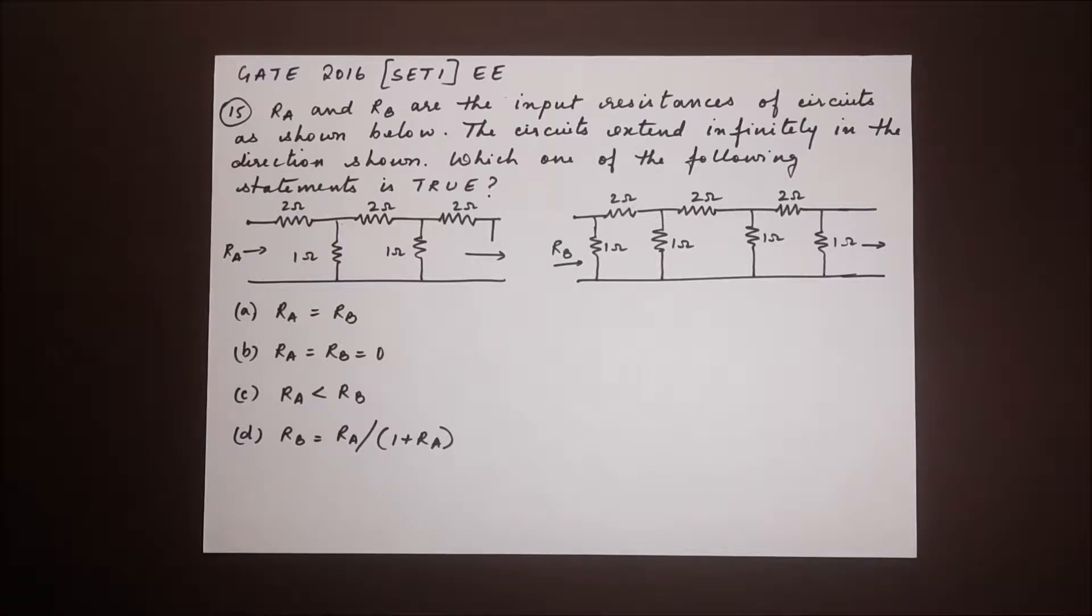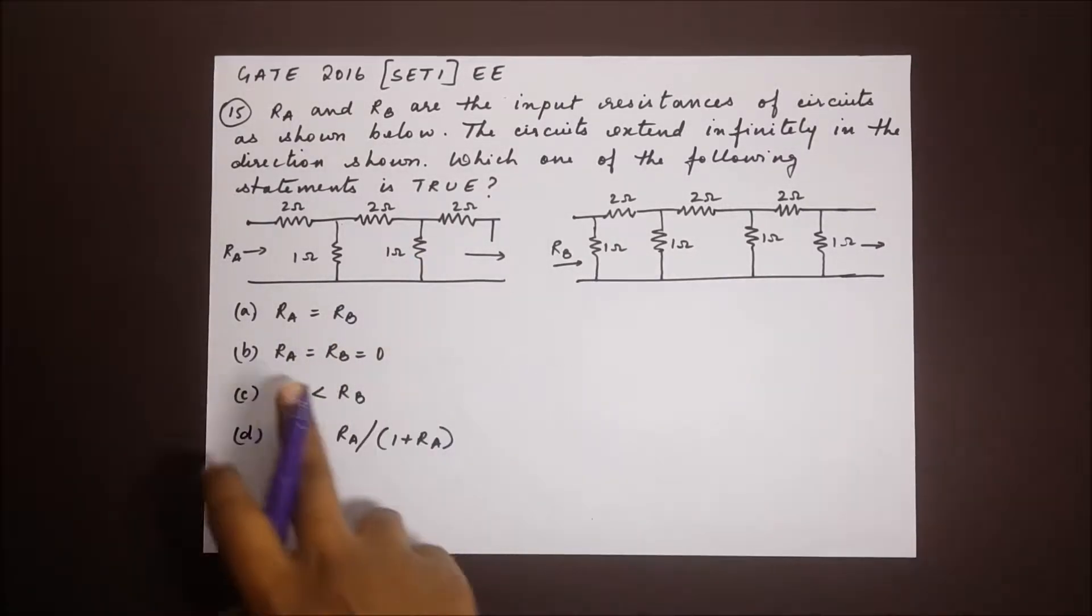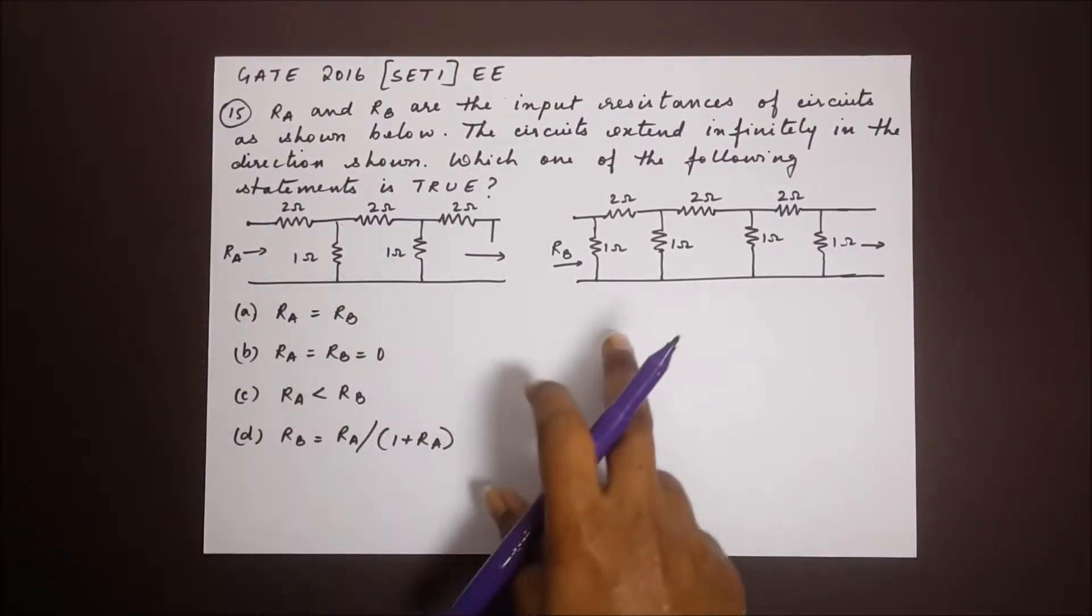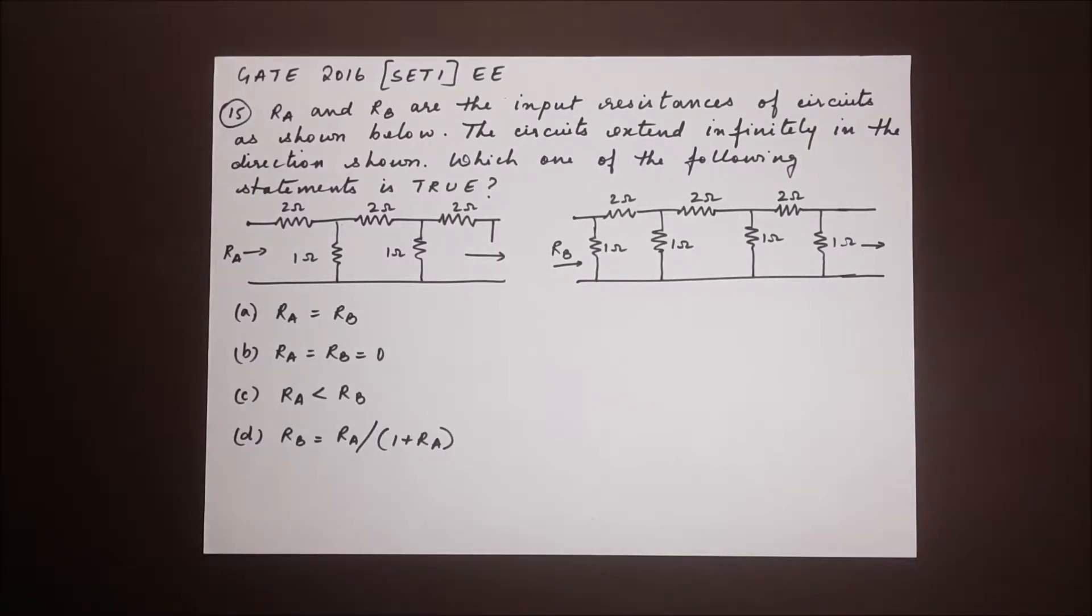RA and RB are the input resistances of circuits as shown below. So we have two circuits here. RA is the input to this circuit. RB is the input resistance to this circuit.